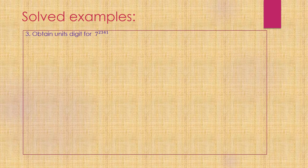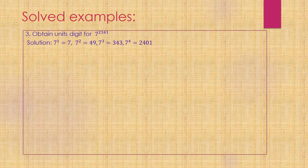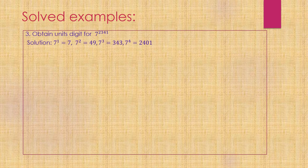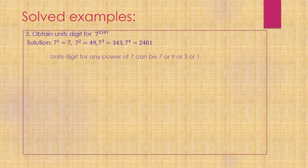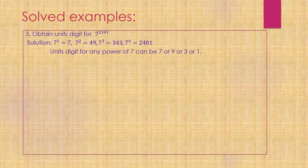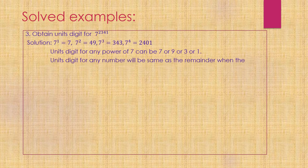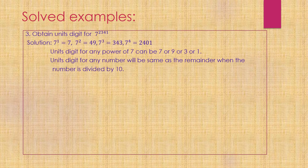Another type of question: obtain the units digit of 7^2341. This is a large number. I can see 7^1 = 7, 7^2 = 49, 7^3 = 343, and 7^4 = 2401. The units digits for powers of 7 cycle through 7, 9, 3, 1. To get the units digit, I divide by 10; the remainder is the units digit. So we work with modulo 10. The easiest approach uses 2401, which leaves remainder 1 when divided by 10. So 7^4 is congruent to 1 modulo 10.